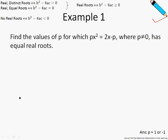In example number 1, we are asked to find the values of p for which this equation, px squared equals 2x minus p, has equal and real roots. Let us first do some simple transformation to the equation — I'm going to shift everything to the left-hand side, and this will give me this.